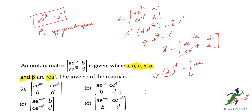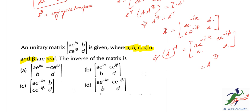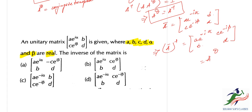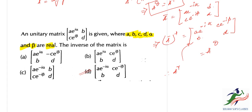So A inverse equals A-dagger, which is the matrix with entries a·e to the power minus i·alpha, c·e to the power minus i·beta, b, and d. This confirms that A-dagger equals A inverse, and the answer is option D.